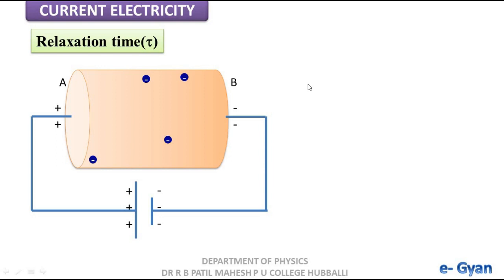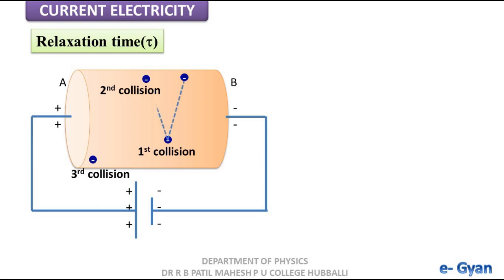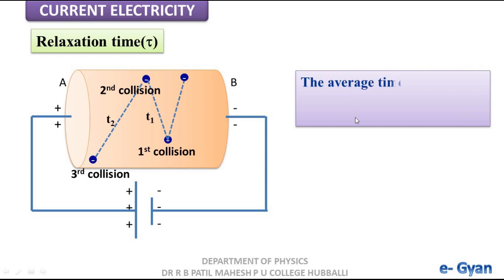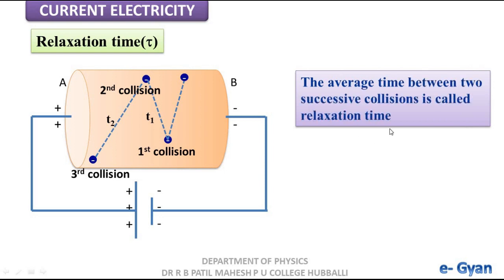This we can understand by a small animation. The electron is undergoing collision with fixed ions. We have considered three collisions: first collision, second collision — the time between first and second collision is t1; third collision — the time between second and third is t2. So the average of these times is called relaxation time. The average time between two successive collisions is called relaxation time.